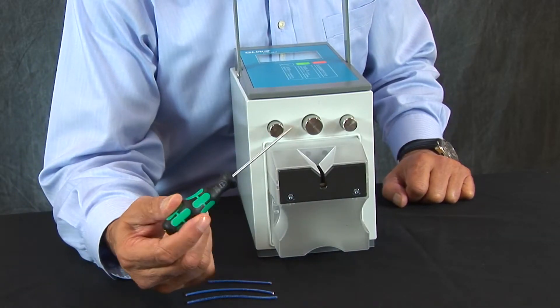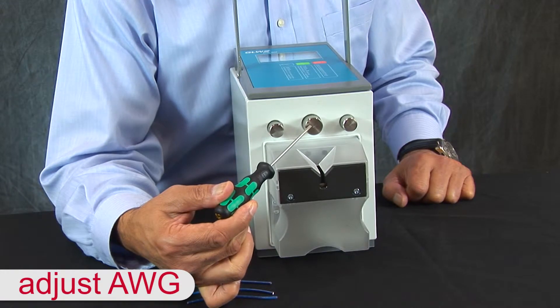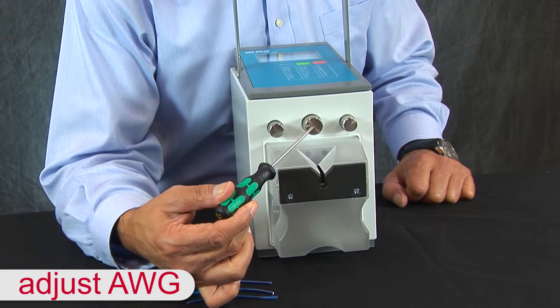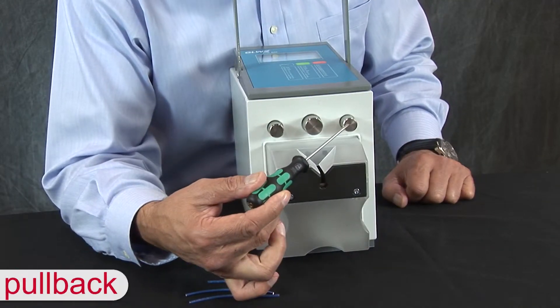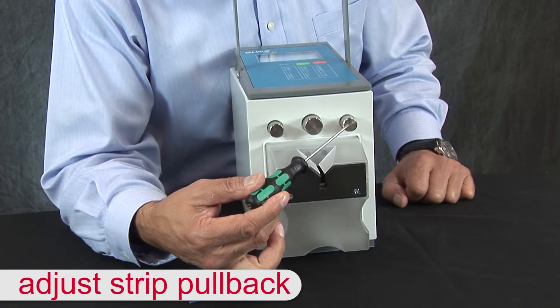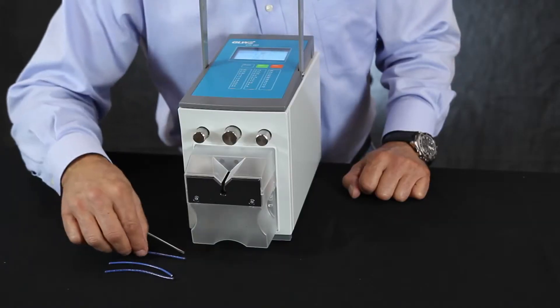This easy-to-use stripper has three dials. The center dial sets the AWG of the wire, the left dial sets the stripping length, and the right dial adjusts the strip pullback of the insulation. After your desired settings are dialed in,